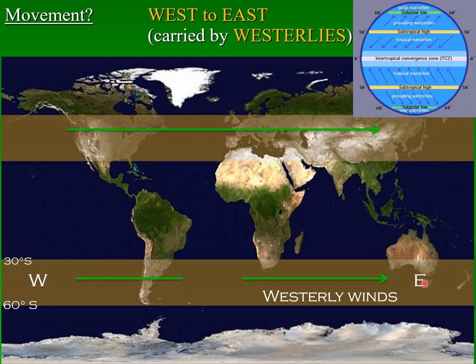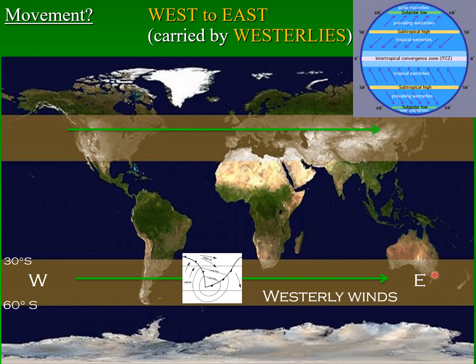Because the mid-latitude cyclone occurs between 30 and 60 degrees, it is influenced by the westerly winds. We therefore need to remember that mid-latitude cyclones always travel from west to east under the influence of the westerly winds. In naming the direction of the entire system, we can speak about the movement being from west to east, or it is acceptable to say that the system is moving eastwards.